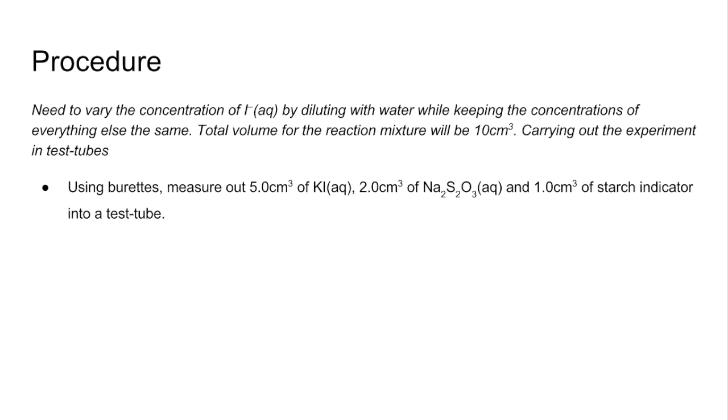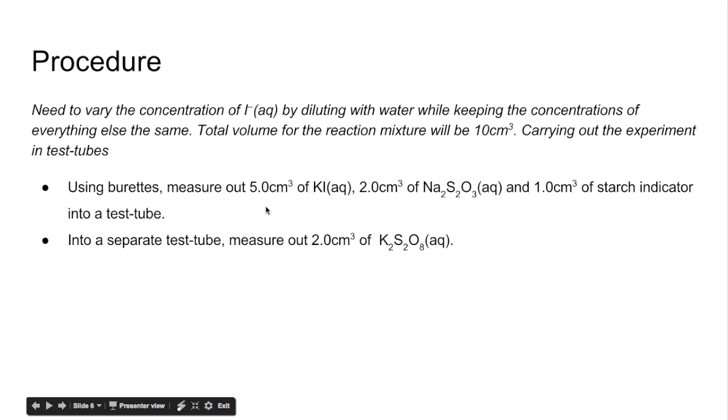Into a separate test tube, I'm measuring out 2 cm³ of the potassium peroxodisulfate solution. In this test tube we've got 5, 2, and 1, so that's 8 cm³, and we've got 2 cm³ in the other test tube. So there's my total volume of 10.